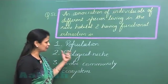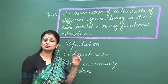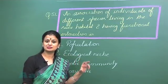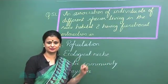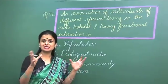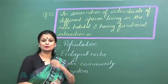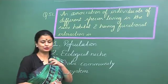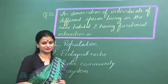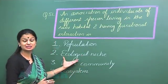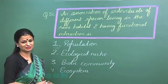Ecological niche represents the status of a species in the ecosystem. In the status of the species we talk about the habitat and the function. It is also known as the bio-data of a species.